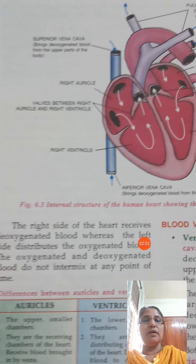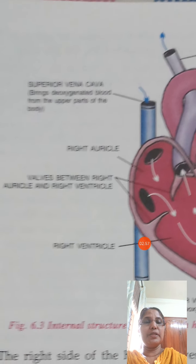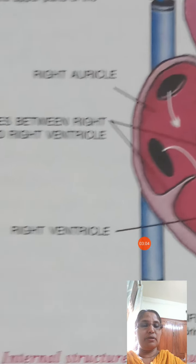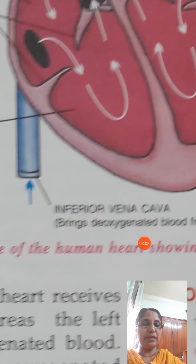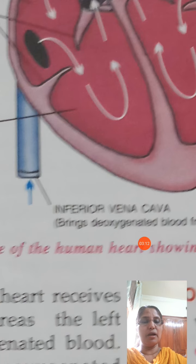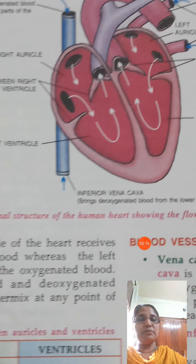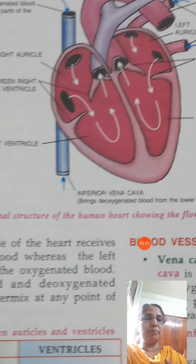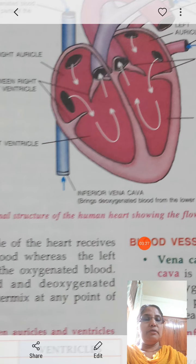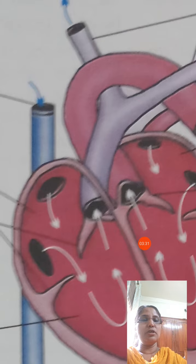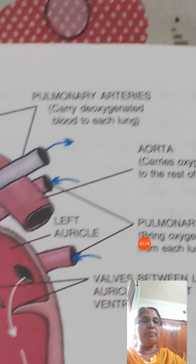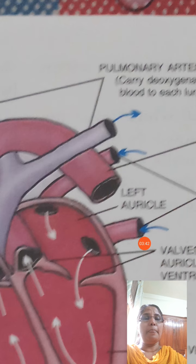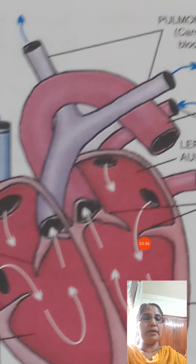Here you can see the inferior vena cava, which carries blood from the skull, trunk and body. Both these vessels — the inferior vena cava and superior vena cava — are filling the right auricle. From the right ventricle, blood goes towards the lungs through the pulmonary artery. The word 'pulmonary' is related to the lungs. The pulmonary artery carries impure blood to the lungs.